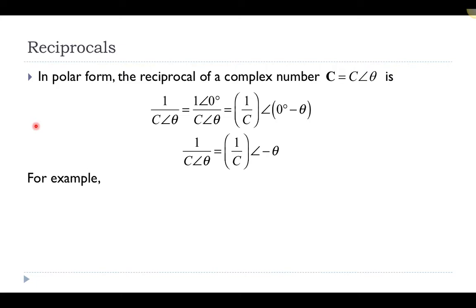If we're going to look at the reciprocal of a complex number, we want our complex number in polar form, and so 1 over that complex number is the reciprocal. 1 is just a real number, and we can write that real number as 1 with an angle of 0. We can treat this as a complex number divided by another complex number. We know how to do division — we take the magnitude of each, divide, so we have 1 over C, and subtract the angles: 0 minus the angle. So the reciprocal of any complex number is just 1 over the magnitude, with a phase angle of negative whatever the complex number's angle was.